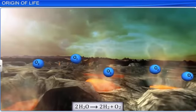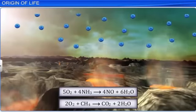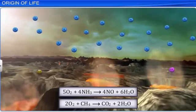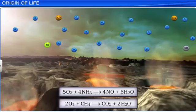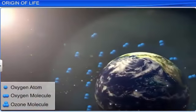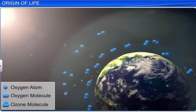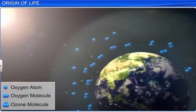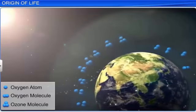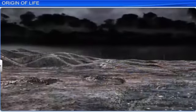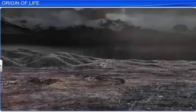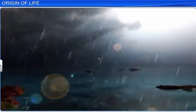Hydrogen, being a lighter gas than oxygen, escaped. Thereafter, oxygen combined with ammonia and methane, which led to the formation of water, carbon dioxide and other gases. The high-energy ultraviolet rays of the sun struck the oxygen molecule and split it into oxygen atoms, which in turn reacted with other oxygen molecules to form ozone, and thus the ozone layer was formed. Some of the water vapor cooled and came down as rain, which filled all the deep depressions on the earth and formed oceans.